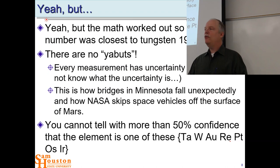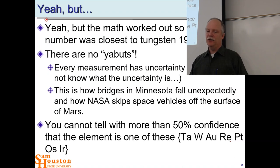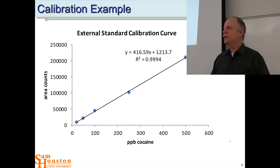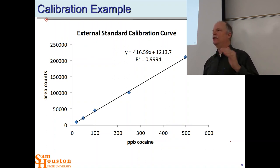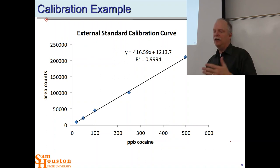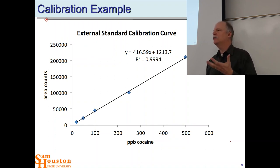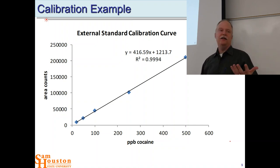The math worked out to where it's most probably tungsten, but with our uncertainty, you can't say that definitively. So let's look at a calibration example — this is extremely relevant to your work in science because you've done calibration curves. Let's say you have cocaine samples: you run standards at certain parts per billion cocaine through a gas chromatograph and integrate the peak areas. You have area counts for each of your standards and you get a very nice linear fit — the R-squared value is 0.9994.